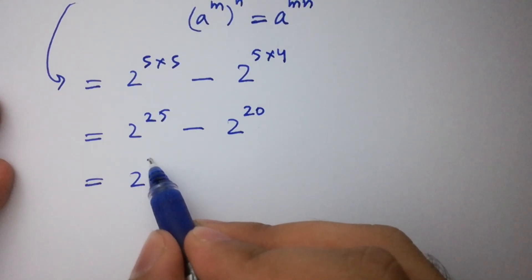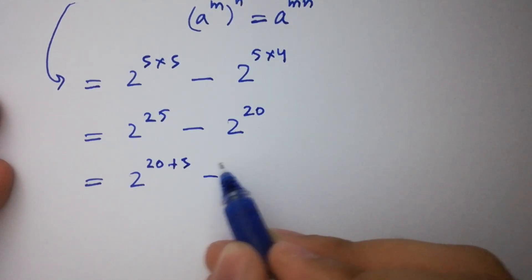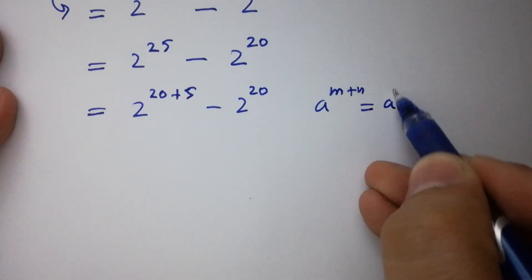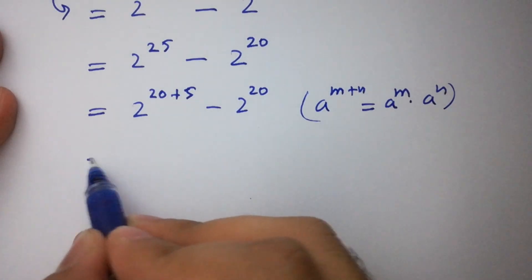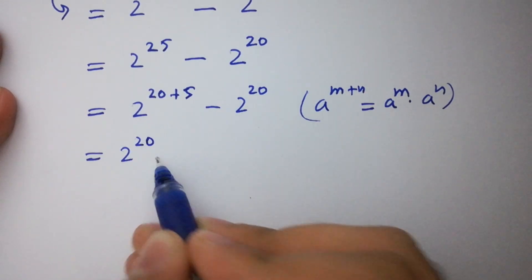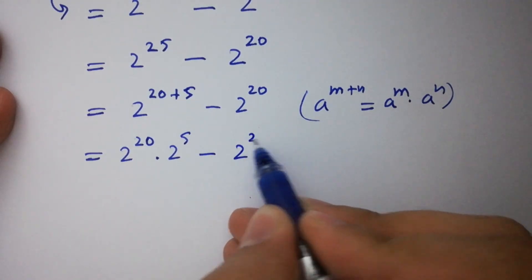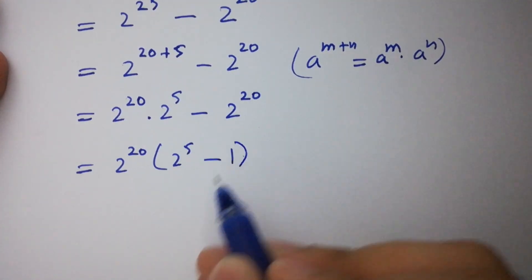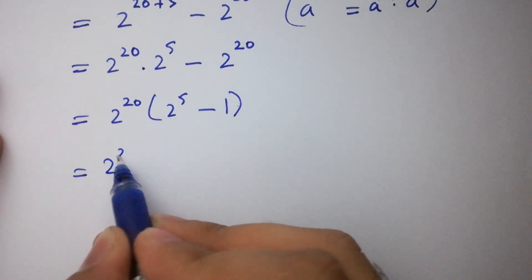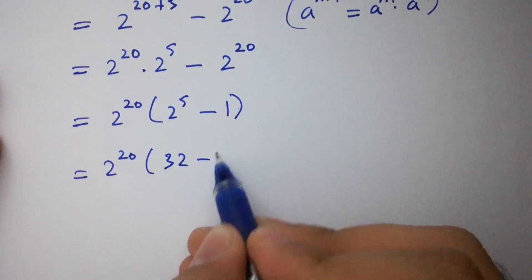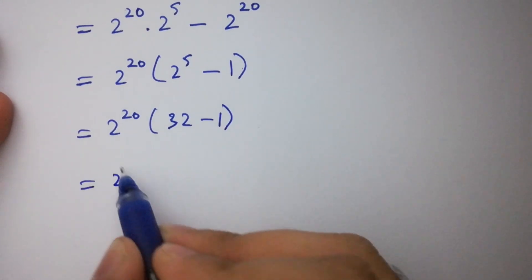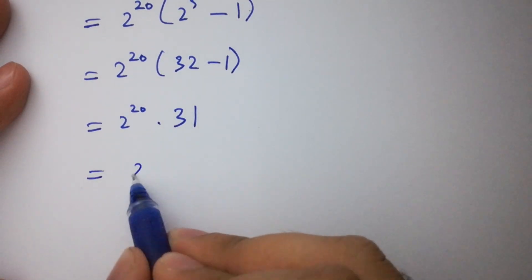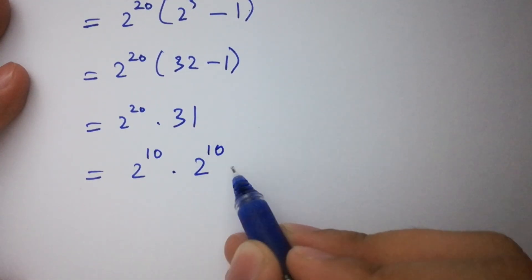We write 2 to the power 25 as 2 to the power 20 plus 5. Using the rule a to the power m plus n equals a to the power m times a to the power n, this becomes 2 to the power 20 times 2 to the power 5, minus 2 to the power 20. Factoring out 2 to the power 20, we get 2 to the power 20 times the quantity 2 to the power 5 minus 1, which equals 2 to the power 20 times 31.